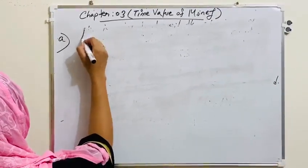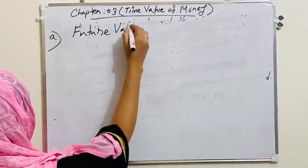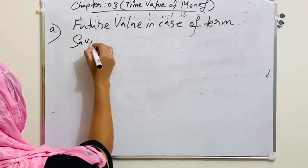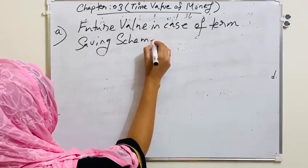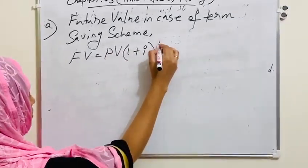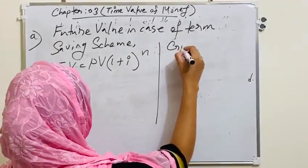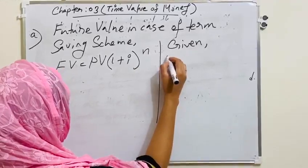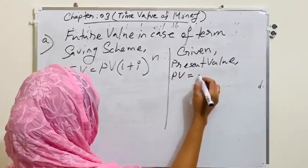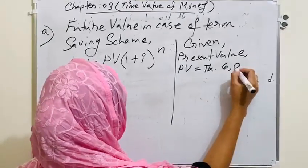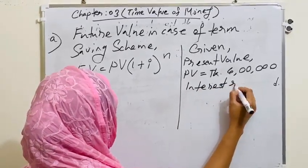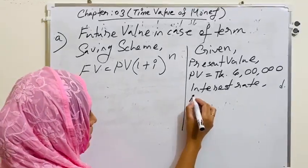Dear students, in our first question, we have to use the compounding method. Which means we have to calculate the future value of term saving scheme. Which is FV equals to PV into 1 plus I to the power N.